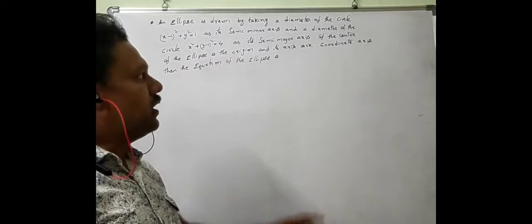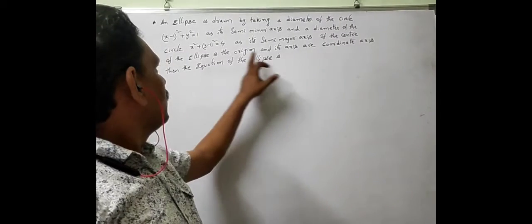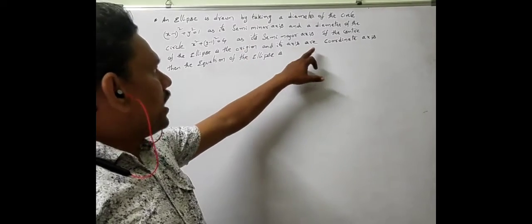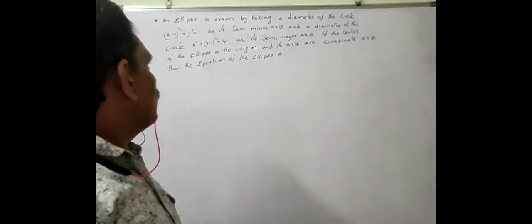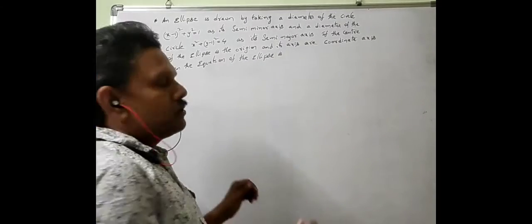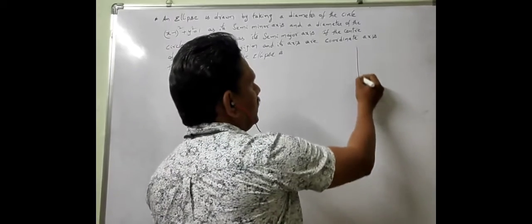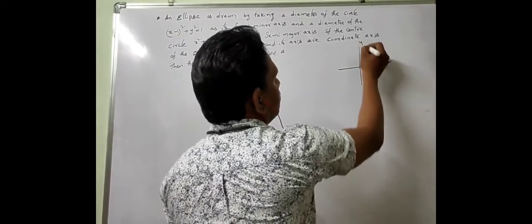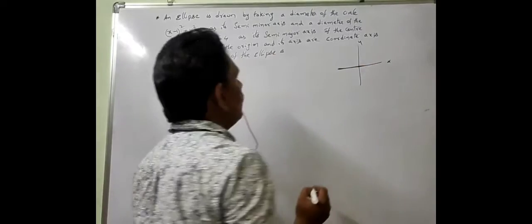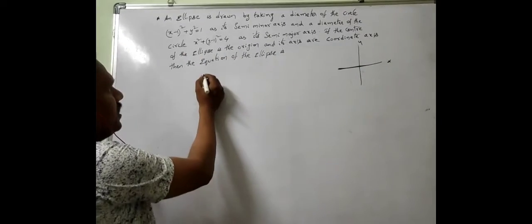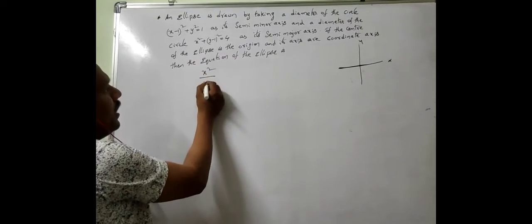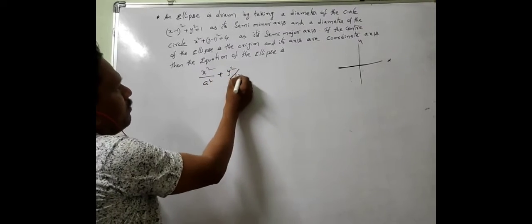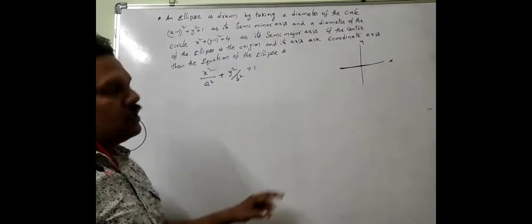We are asked to find the equation of the ellipse whose center is the origin and whose axes are the coordinate axes. Since the center is the origin and the axes are on the coordinate axes, we want the ellipse equation in the form: x square by a square plus y square by b square is equal to 1.